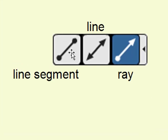The three options you see in the line tool are first, a line segment, second, a line going in both directions, and third, a ray, which has a point on one end and an arrow on the other end.